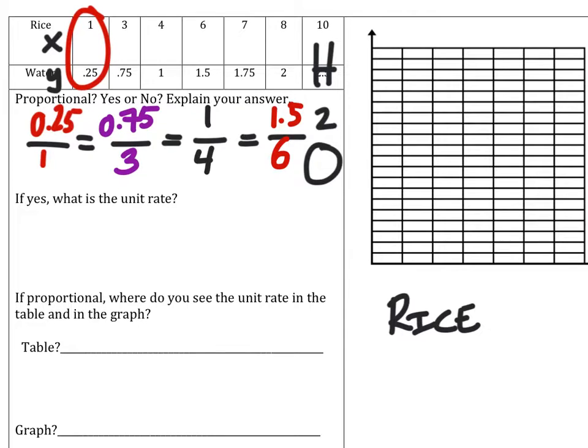Now just because these first four are equivalent does not mean that the rest will be, because as math teachers it's very fun to trick people here later on in the table. So just be aware that it's very likely that if it is not proportional, it will likely happen later on in the table. So we do need to compare these others. The next one would be 1.75 over 7, and if we divide that we get 0.25.